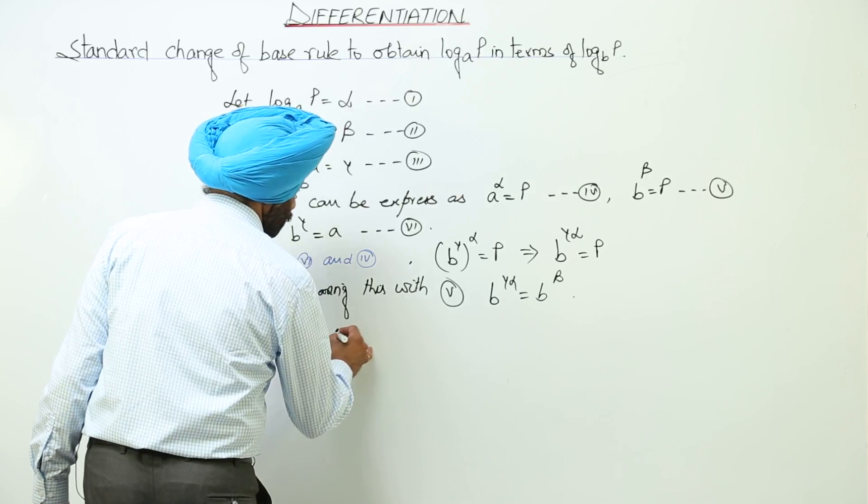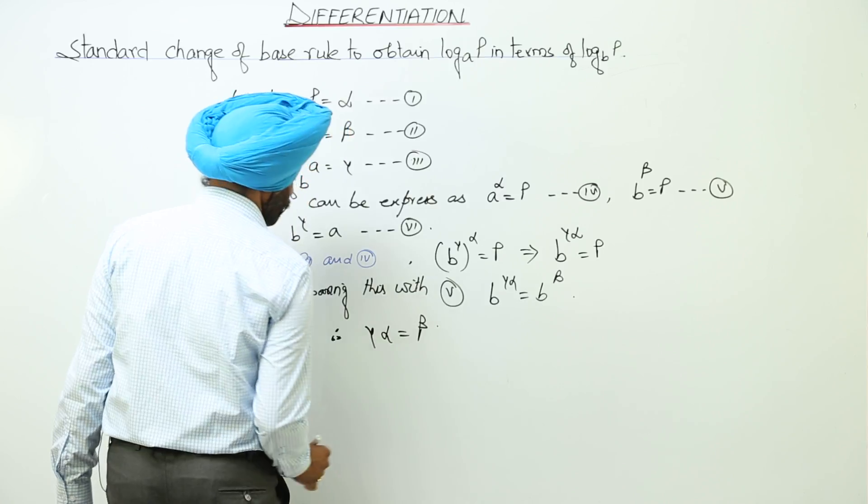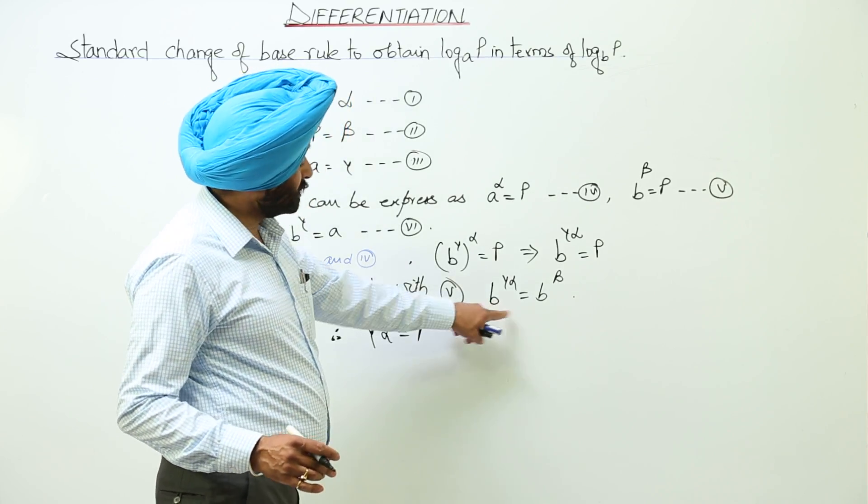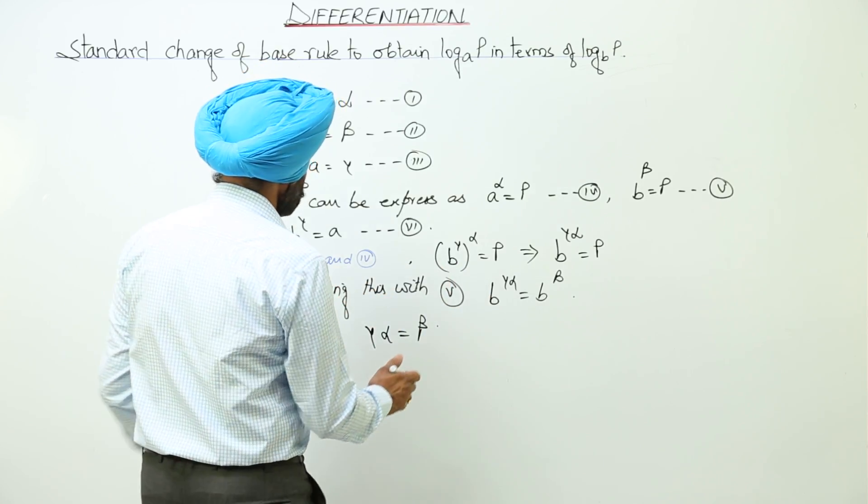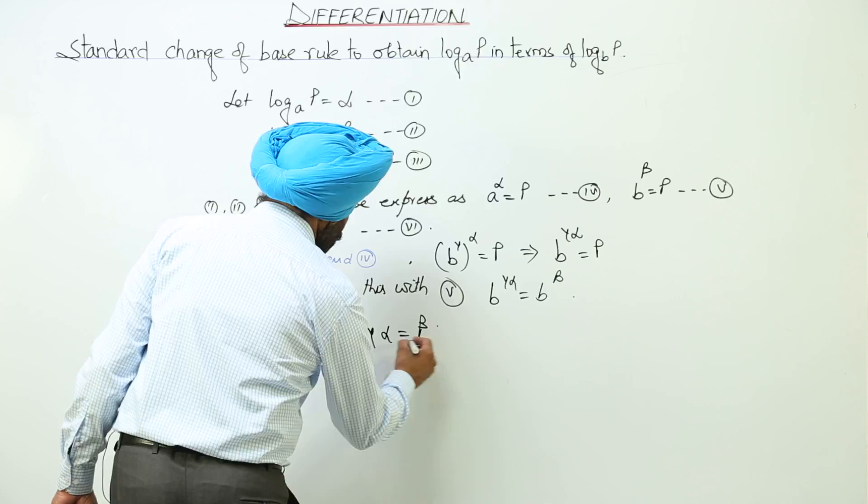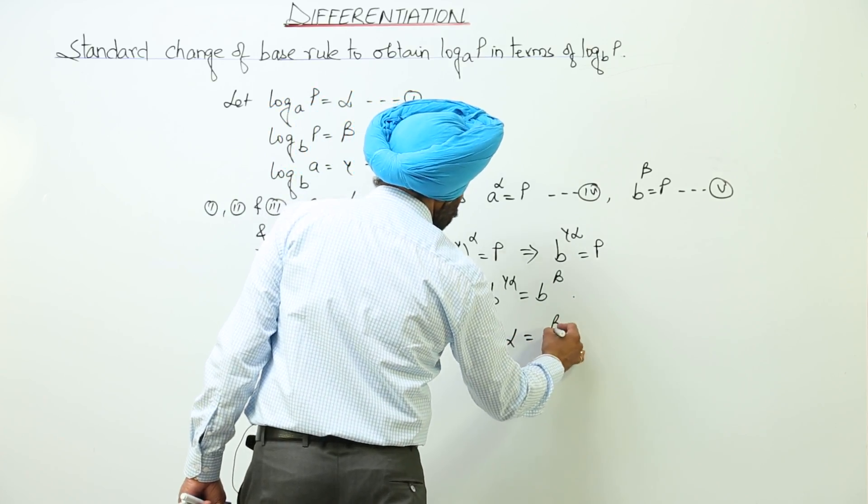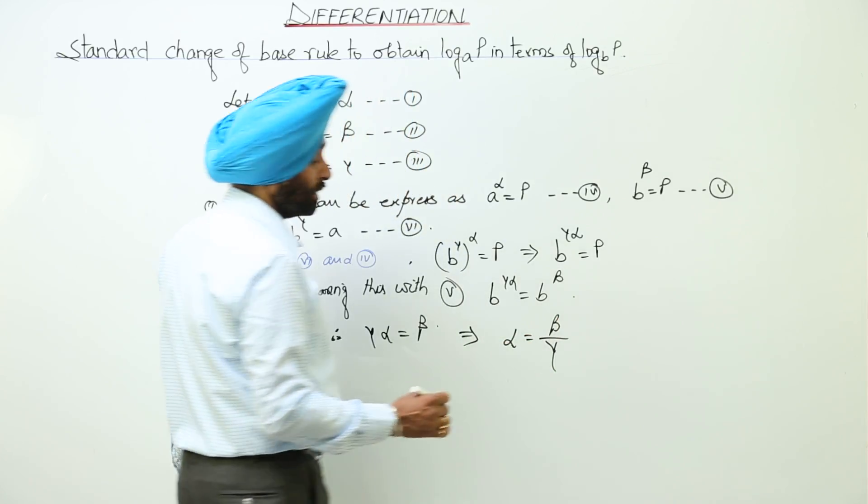Therefore, gamma alpha equals beta. Is it clear? When bases are equal, powers we can equate. Now we are having alpha gamma equals beta, or we can write alpha equals beta upon gamma.